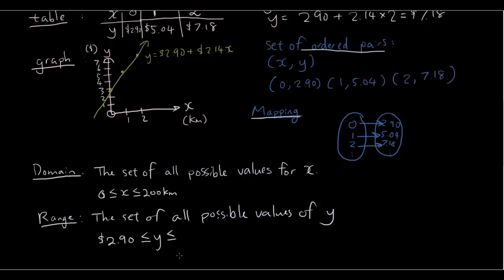And let's say the taxi... Well, really it's going to depend on what x is, isn't it? So, if you travel 200 kilometers, 200 times $2.14 plus $2.90 is $430. And that just comes from 200 kilometers, putting 200 kilometers into the equation.